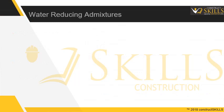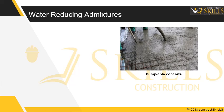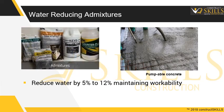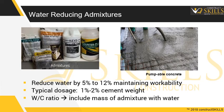Water reducing admixtures can be used in cases like pumping of concrete where workability is required. Chemicals can be used to help reduce the amount of water used by 5% to 12% while maintaining workability and strength. The typical dosage rate is based on milliliters per kilogram of concrete and is 1% to 2% of cement weight. The total content of admixtures should be included in the total mass of water when calculating the water cement ratio.